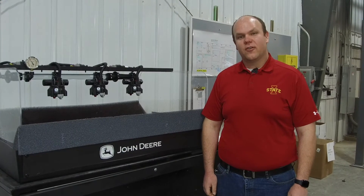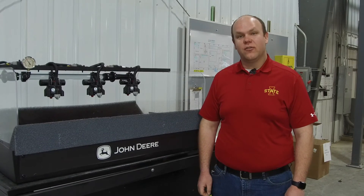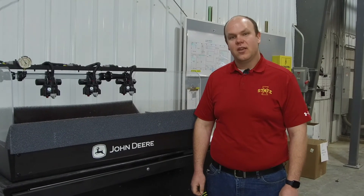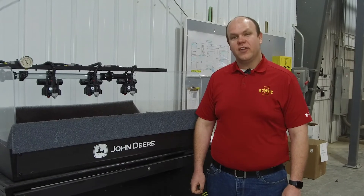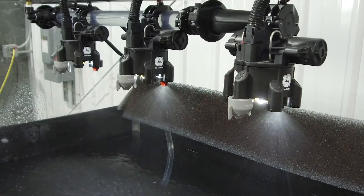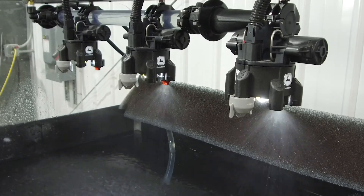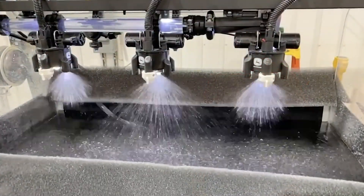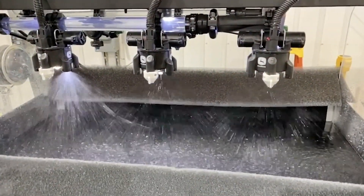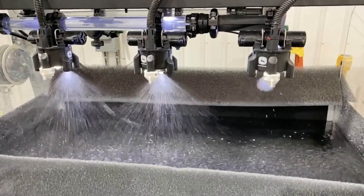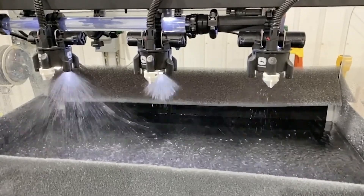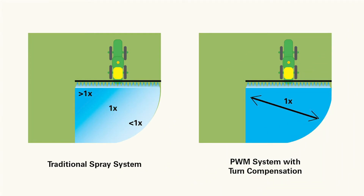These pulse width modulated systems offer improved rate control since we're able to maintain spray pressure across the boom, which helps ensure we have uniform spray pattern and droplet size out of every nozzle. These systems also offer individual nozzle section control, which can be beneficial in irregularly shaped fields or fields with a lot of waterways and obstacles to help you save chemical costs within your operation. Finally, most of these systems offer turn compensation, so as you're going through a turn it varies the duty cycle from one side of the boom to the other, helping ensure that you have accurate rate across the entire boom — where traditional systems would often have drastic changes in rate from one side of the boom to the other through a turn.